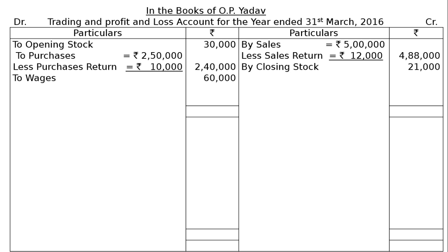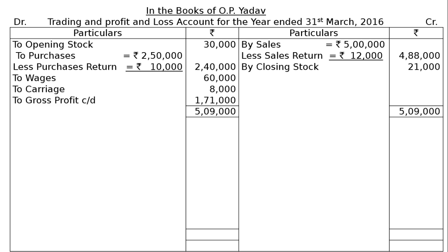Then factory expenses: wages Rs. 60,000, and carriage inward or carriage on purchases Rs. 80,000. Total the credit side, which comes to Rs. 5 lakhs 9,000. Write down on the debit side Rs. 5 lakhs 9,000, and deduct Rs. 30,000, Rs. 2 lakhs 40,000, and Rs. 68,000 to find the difference — that is gross profit carried down Rs. 1 lakh 71,000.